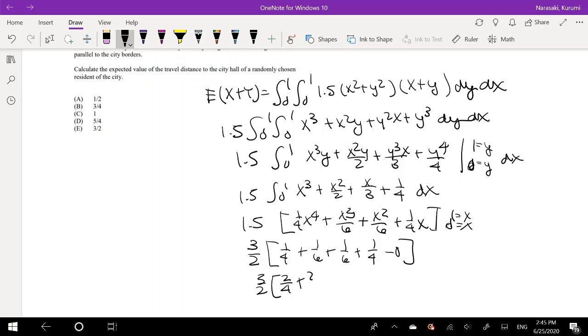So this is equal to 3/2 times 2/4 plus 2/6, right? Or we can just simplify this to 1/3 and this to 1/2. So this is also equivalent to saying 3/6 plus 2/6. Still following?